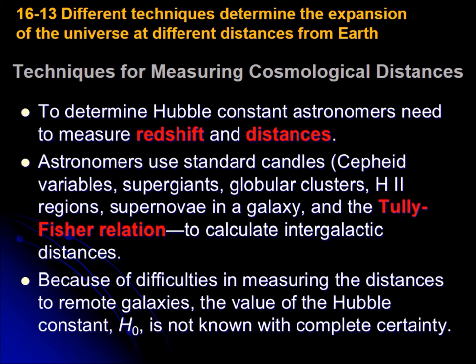The accuracy of Hubble's flow depends on how well we determine how far those objects are from us, and there are different techniques. In this section, we're going to see three or four techniques to measure those cosmological distances. To determine the Hubble constant, we need to know the redshift and the distance. For the distance, we need to observe the objects — and usually the objects that allow us to find distances are the Cepheids, in which we can calculate the period, and the period can be used to obtain the distance.